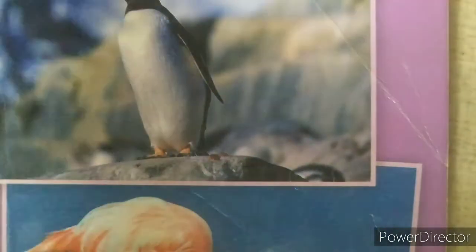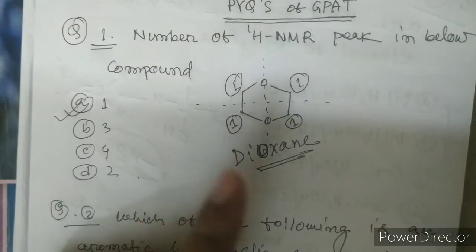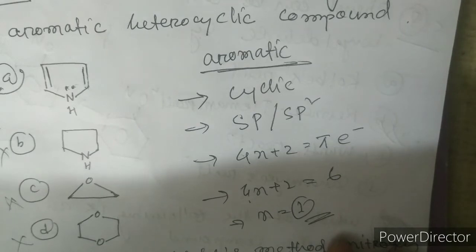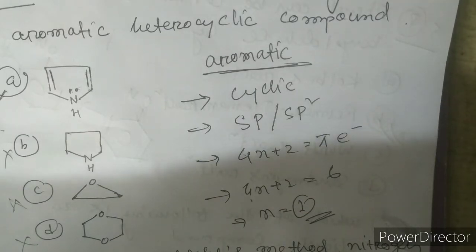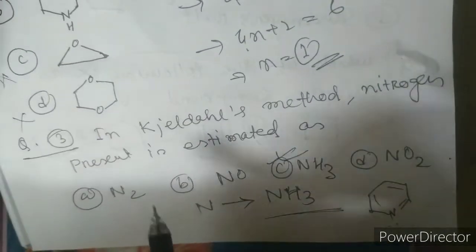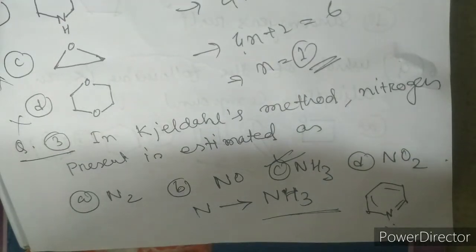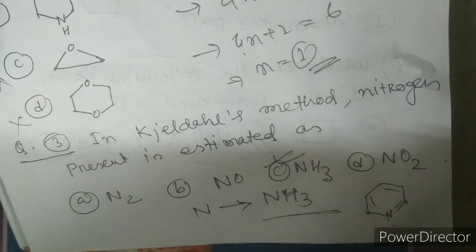Let's recap all six questions. Q1: only one type of hydrogen environment exists, so the number of NMR peaks is one. Q2: for aromatic compounds — cyclic, planar (sp or sp2 hybridized), follows Hückel's rule (4n + 2 = pi electrons), and complete cyclization. The answer is imidazole, which is heterocyclic and aromatic. Q3: Kjeldahl's method — nitrogen is converted to NH3 (ammonia). Dumas method converts nitrogen to N2. Kjeldahl's method is not applicable for compounds with nitro groups, azo bonds, or pyridine.